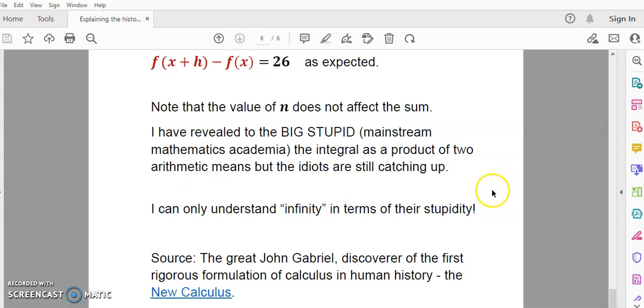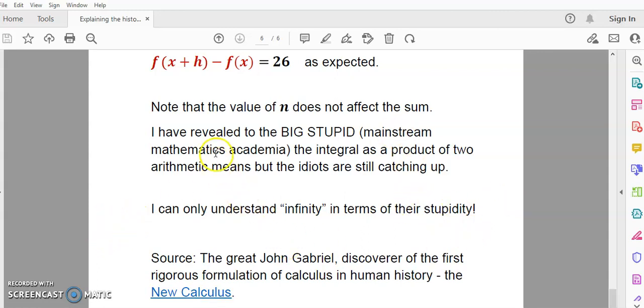So I have revealed to mainstream academia that the definite integral is a product of two arithmetic means, but still the majority of the idiots fail to see it. And they're still playing catch up. Well I can only understand infinity in terms of their stupidity.